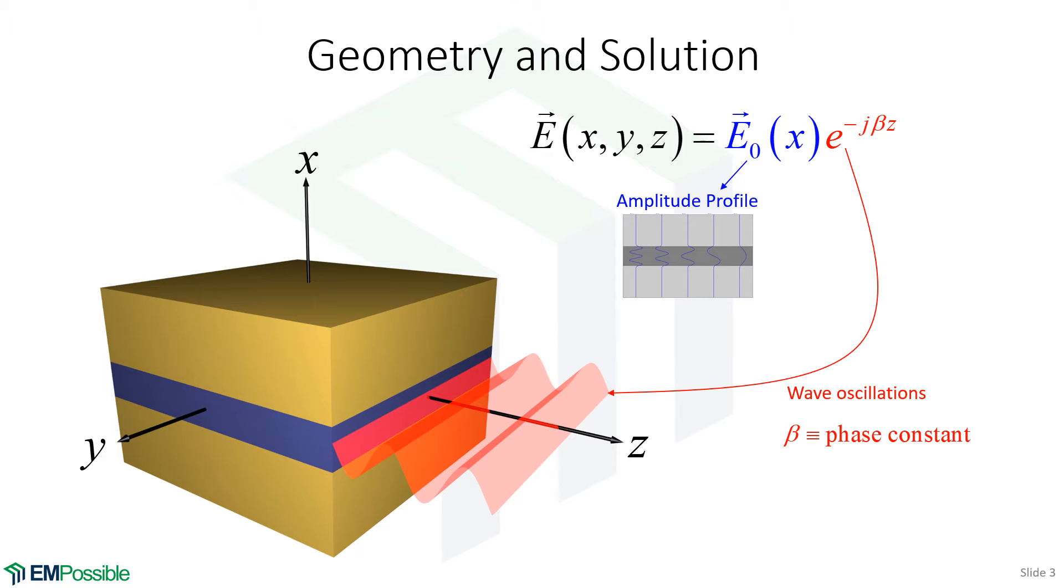The amplitude term is now only a function of X. It does not change in the Y direction, does not change in the Z direction. The electric field does change in the Z direction. That's described by this oscillation term, but the actual picture of the mode in the cross section does not.